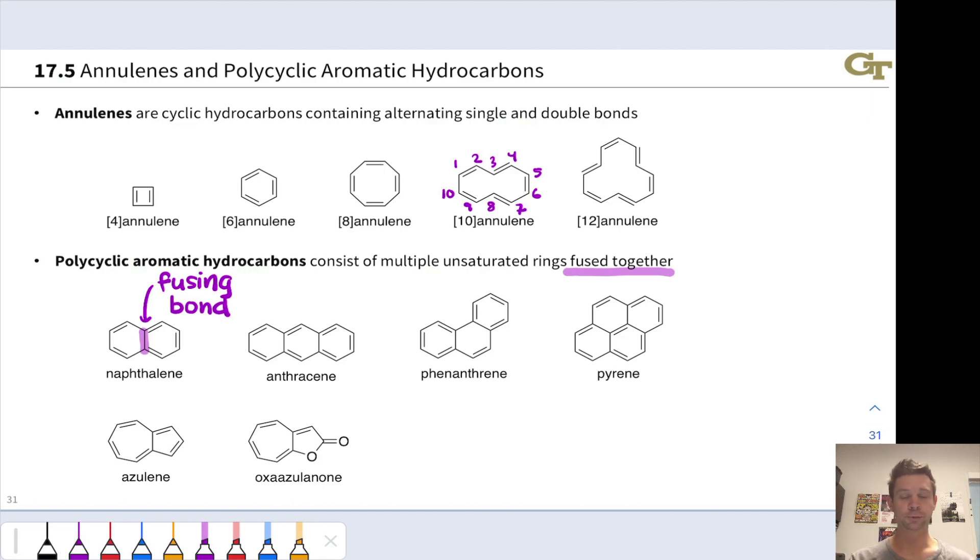We can have more than two rings fused together. For example, in anthracene, three rings can be fused together in a linear way, or in an angular way as in phenanthrene. We can have rings fused along multiple bonds. For example, in pyrene, this ring here has a fusing bond here, here, and here, giving this kind of honeycomb shape.